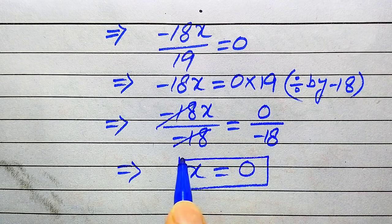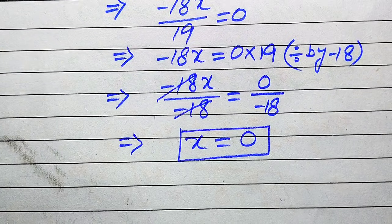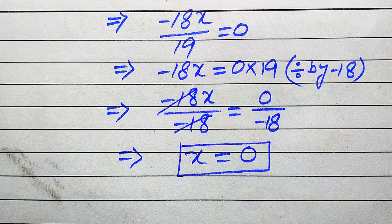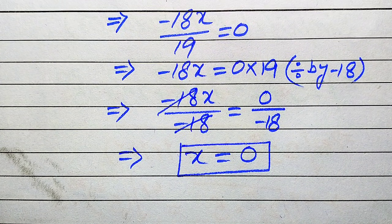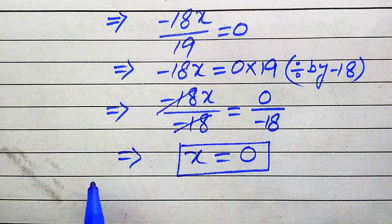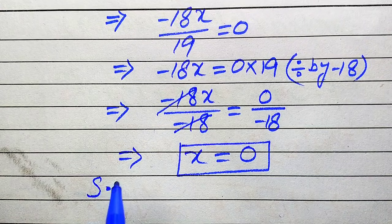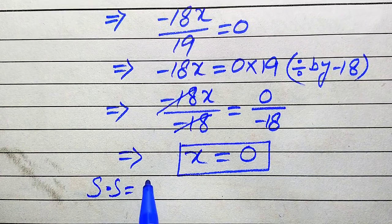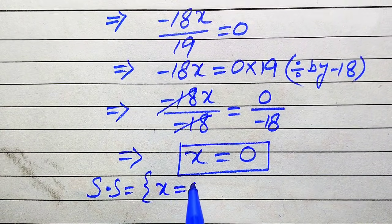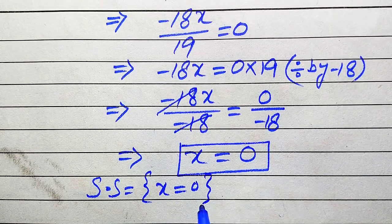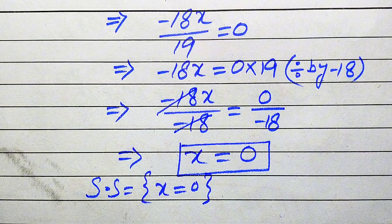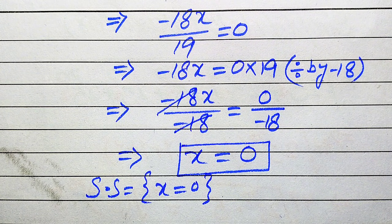In the second method we again get x equals 0, and we already verified in the first method that this value satisfies the given equation. So the solution set of this equation is x equals 0. That is our final answer. Thank you for watching — please subscribe to the channel for more videos.